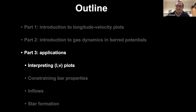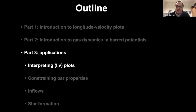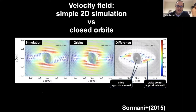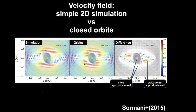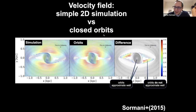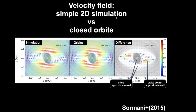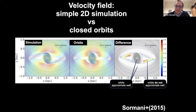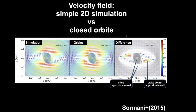Now we can use this knowledge to interpret what we see in the LP plots, starting from 3–4 kiloparsecs from the center and gradually moving inward. A question from the audience asks about the color bar in the difference plot — the answer is that it's in units of hundreds of kilometers per second; since the background is around 100, it's roughly on the order of a few percent deviation.